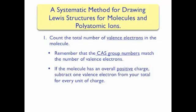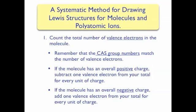If molecules have charges, we need to subtract or add electrons appropriately. If the molecule has an overall positive charge, this is because it is missing electrons; therefore we must subtract 1 valence electron from our total electron count for every unit of charge. For example, if our polyatomic ion has a +1 charge, we will need to subtract 1 electron from the total valence electron count. If our molecule has an overall negative charge, we need to add 1 valence electron to our total valence electron count. For example, for the carbonate ion, which has a −2 charge, we will need to add 2 electrons to the total valence electron count.